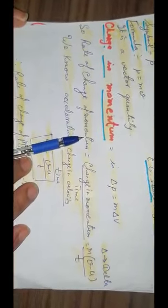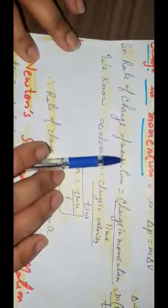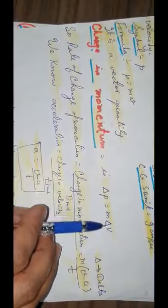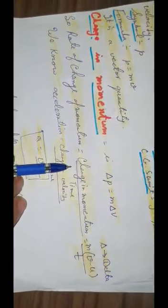Next is the change in momentum. Change in momentum is given by delta P is equal to M delta V, where this sign represents delta. The change in product M into V can be either due to the change in the mass or due to the change in the velocity or due to change in both the mass and the velocity.